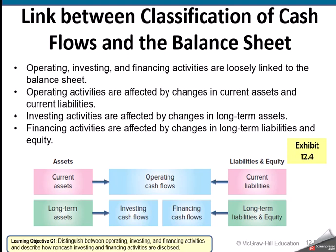The cash flow statement is built by looking at our changes in our balance sheet. We look at our balance sheet and say, how did it change and how does that impact our cash flow statement? Our current assets and current liabilities — those changes will go into the operating section. Our long-term assets will go into the investing section, and the changes to any long-term liabilities or owner's equity goes into financing.